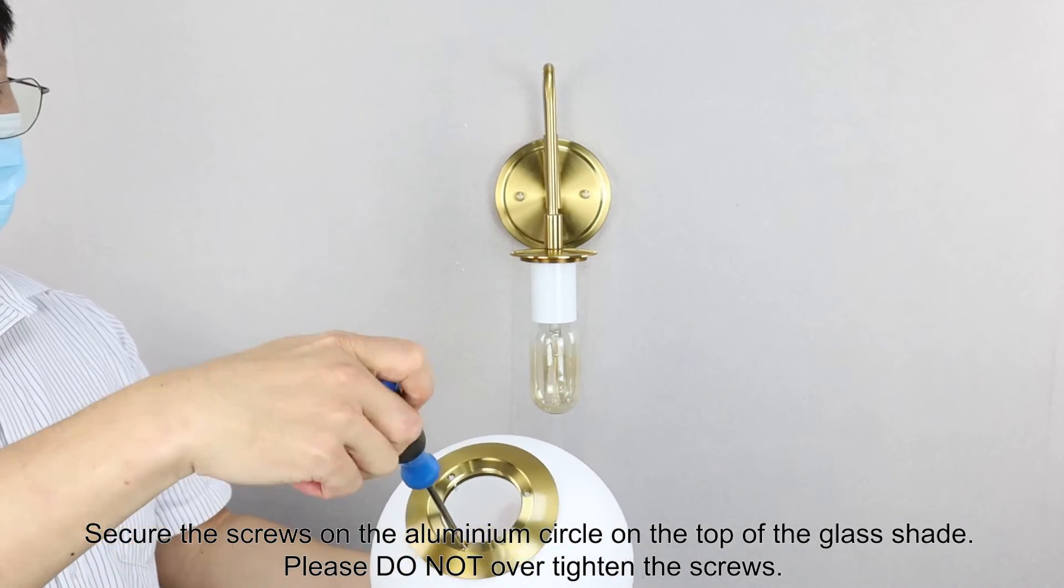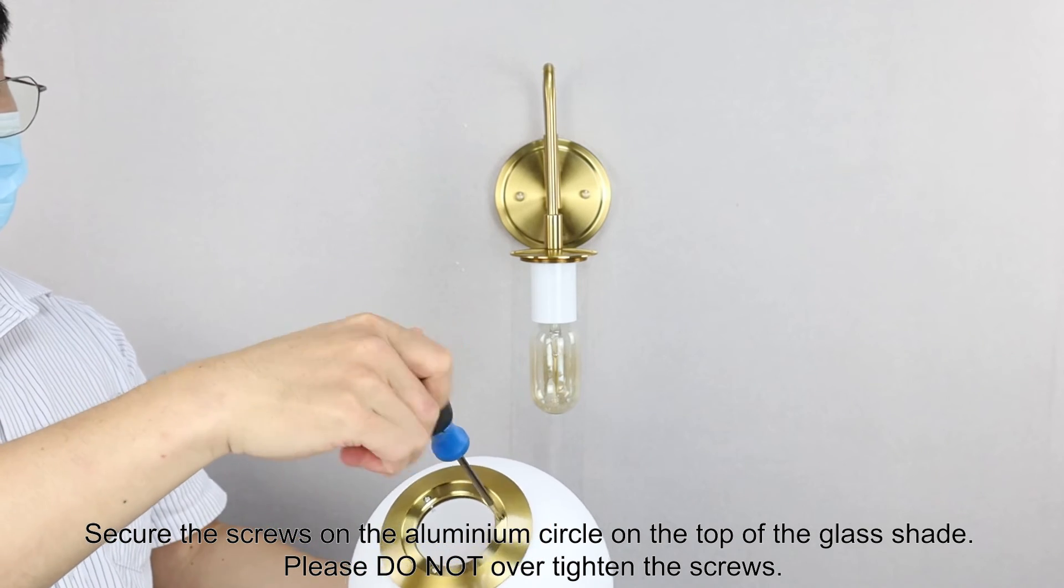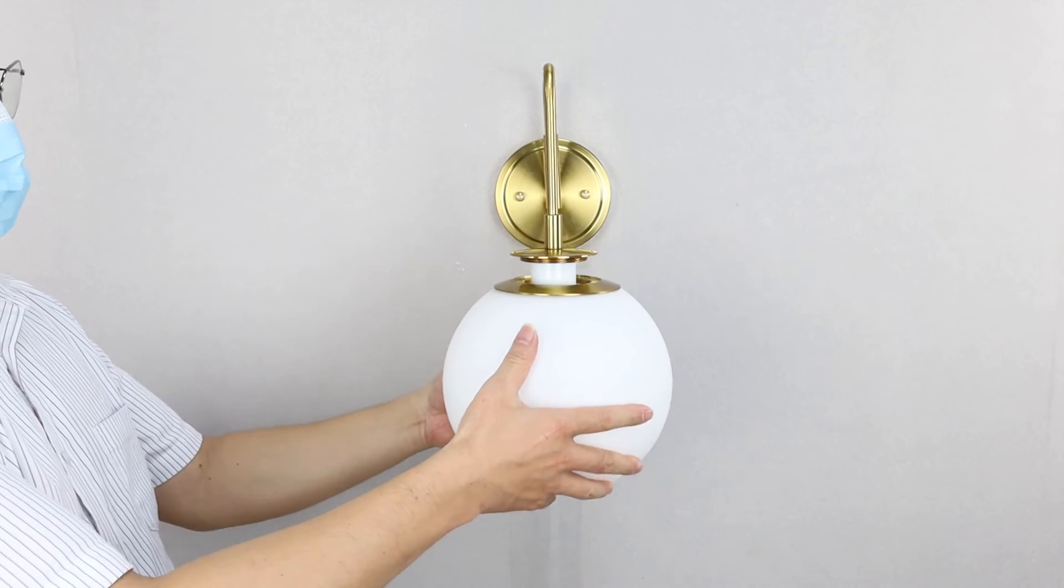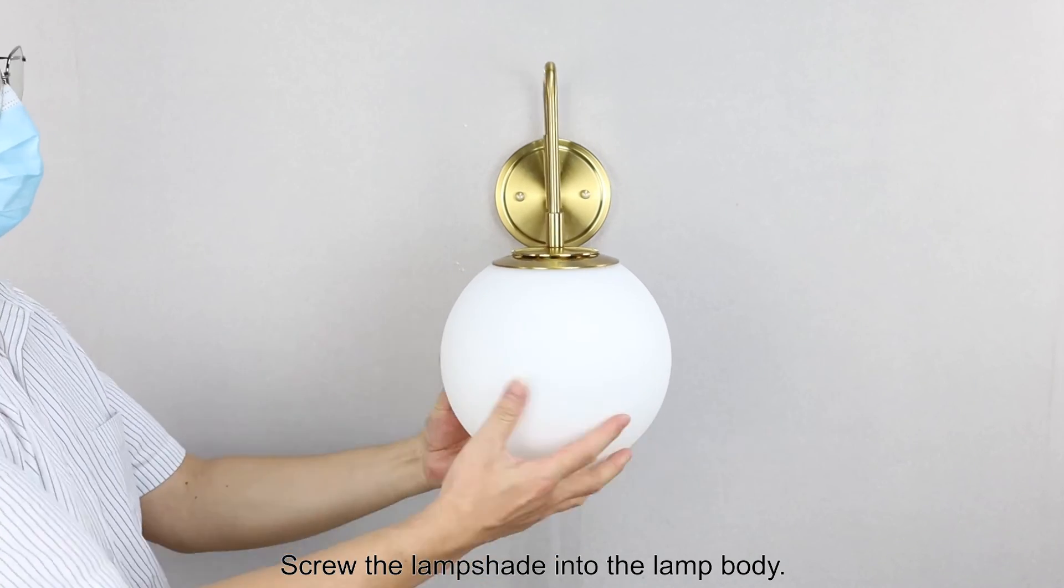Secure the screws on the aluminum circle on the top of the glass shade. Please do not over tighten the screws. Screw the lampshade into the lamp body.